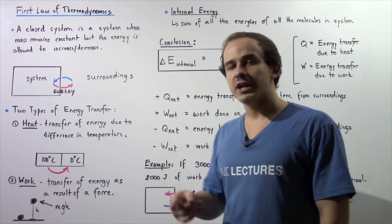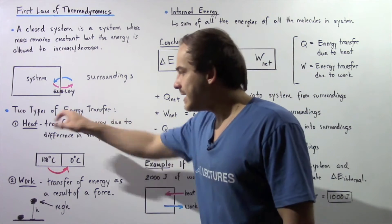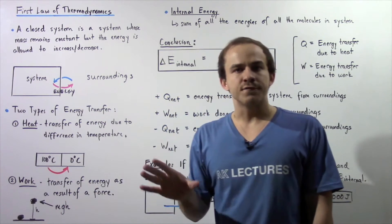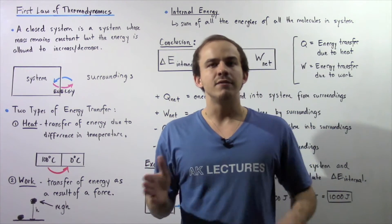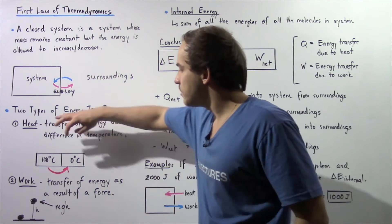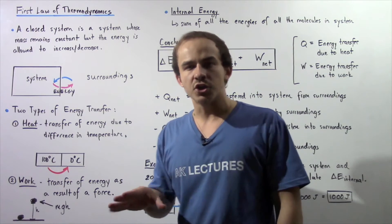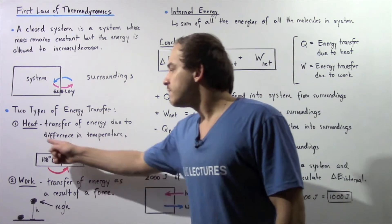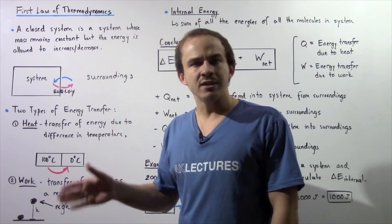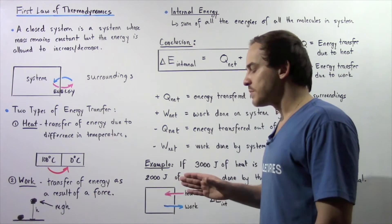Energy is able to transfer in one of two ways: we have heat and work. Heat is essentially the transfer of energy as a result of a difference in temperature. For example, if we have two objects which are in contact with one another, energy will flow from the hotter object to the cooler object until thermal equilibrium is established.